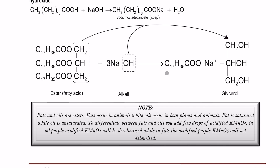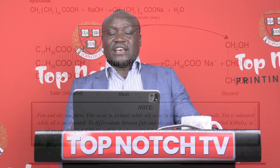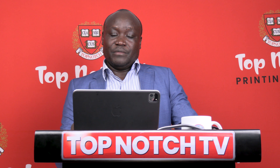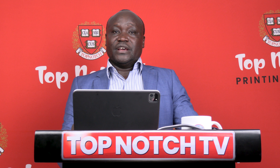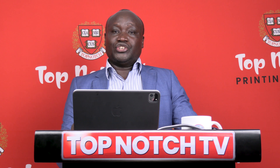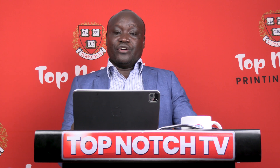This applies three times because of the three ester groups present. The salt that is formed is C17H35COONa. What comes out is CH2OH, CHOH, CH2OH — and that substance formed is called glycerol. Glycerol is an example of a triol because it has three OH groups; in fact it is called propane-1,2,3-triol.